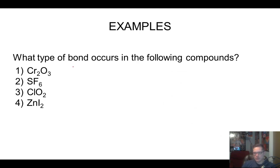Let's see if we can identify what type of bond occurs in the following. So essentially, we're asking, is it ionic or covalent? And then from then, we're just asking ourselves, is it a metal with a nonmetal or just nonmetals combined?